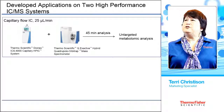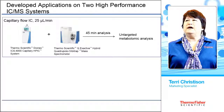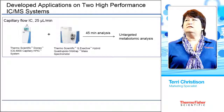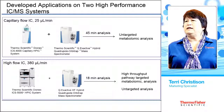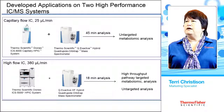We have two applications we've developed for metabolomics. We have a capillary IC system at 25 microliters per minute on the ICS-4000 HPIC system, coupled with the Q-Exactive Hybrid Quadrupole Orbitrap Mass Spectrometer. It's a 45-minute analysis, and we used it for our non-targeted metabolomic analysis. Additionally, we developed a higher flow rate application at 380 microliters per minute on the ICS-5000 Plus HPIC system, coupled with the Q-Exactive HF Hybrid — a high-throughput targeted analysis in 18 minutes that can also be used for untargeted analysis.